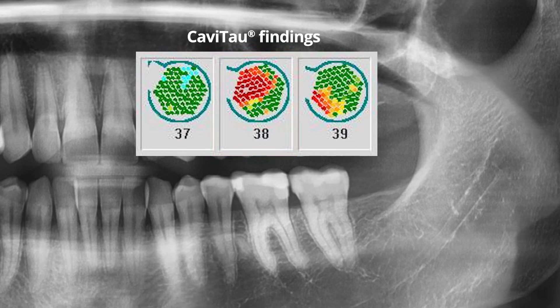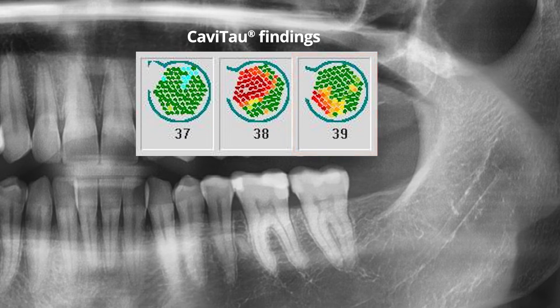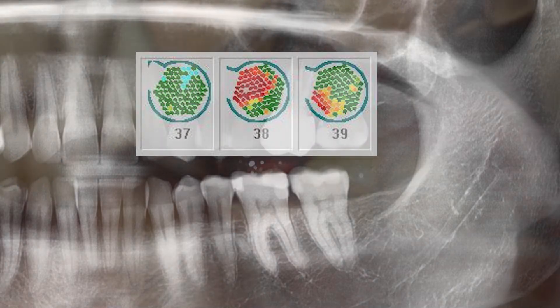In contrast, areas 3,8 and 3,9 in red show reduced bone density, with suspected fatty-degenerative osteolysis in the jawbone — FDOJ. This is the indication for the surgical intervention shown in the video.